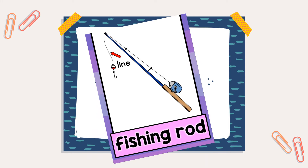Look at the picture and repeat after me. Fishing rod. Fishing rod. Maksud dia, apa ni fishing rod? Kita guna untuk memancing — for fishing. Okay, ni tali dia, kita panggil line. Okay, line.